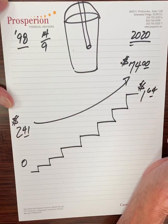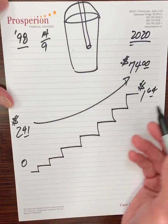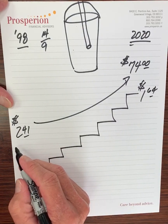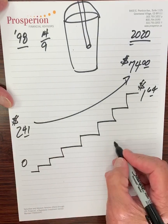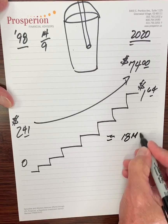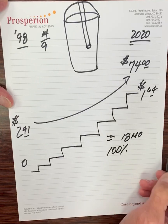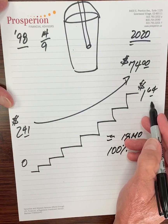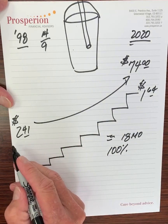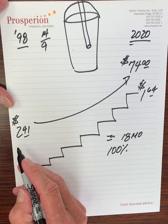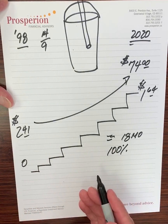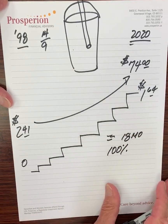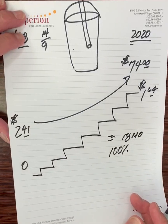Pretty remarkable. What's also interesting is the dividend of $1.64 versus what we originally invested. It takes about every 18 months for us to get back 100% of our original investment. $1.64 in dividend income each year takes about a year and a half to get back all of the original investment in this company. That's what we look for in great companies that grow income over time. If you have any questions about this concept, feel free to give us a call. Thank you very much.